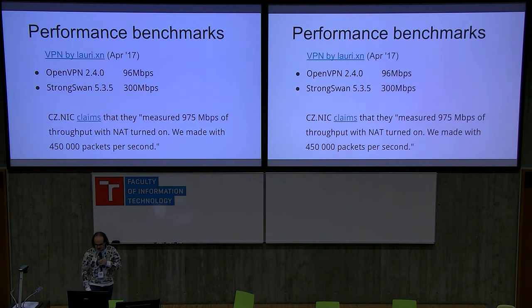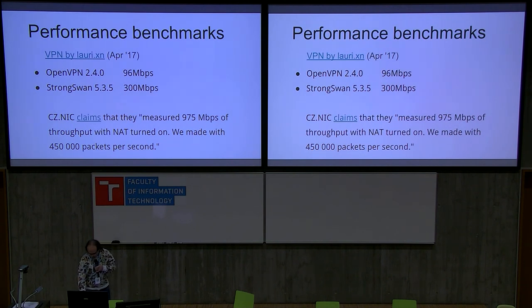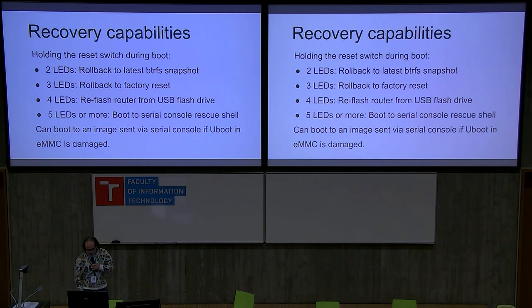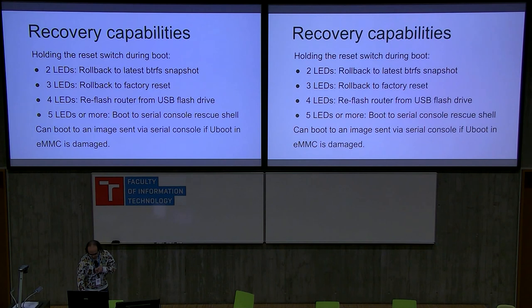Performance benchmarks: IPsec 300 megabits, OpenVPN almost 100 megabits. CZNIC claims they measured almost 1 gigabit of throughput with NAT turned on and 450,000 packets per second. Recovery capabilities are very broad — you can roll back to the previous image, factory reset, refresh the router from USB, or boot from serial console. So it's very hard to brick that router. This is the board, and that's it.